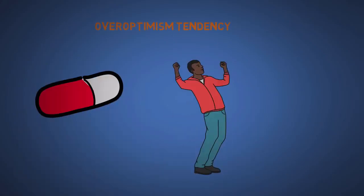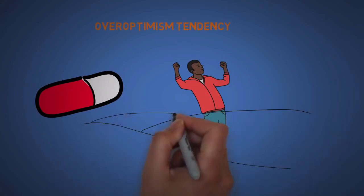The thirteenth is over-optimism. Well, I got a pill that in 20 days you'll lose 100 pounds. In general, we have a tendency to be optimists, especially in new environments, that things will turn out fine.